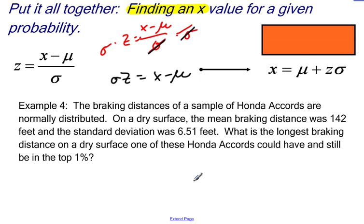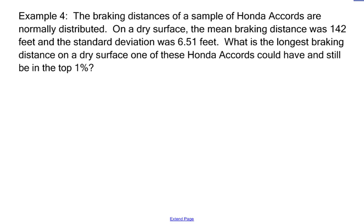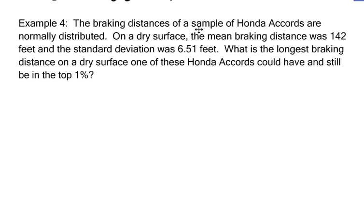All right, let's take a look at this situation. The braking distances of a sample of Honda Accords are normally distributed. This is important. If this did not say it was normally distributed, I could not use a normal model. On a dry surface, the mean braking distance was 142 feet, and the standard deviation was 6.51 feet. What is the longest braking distance on a dry surface one of these Honda Accords could have and still be in the top 1%?